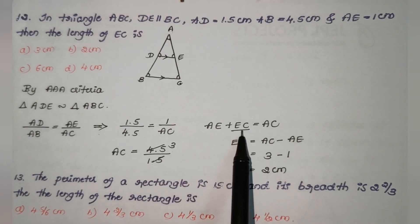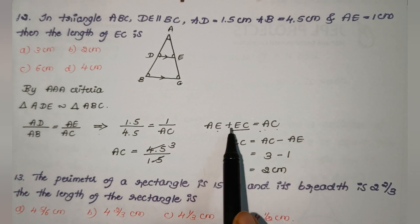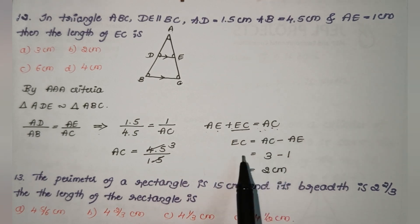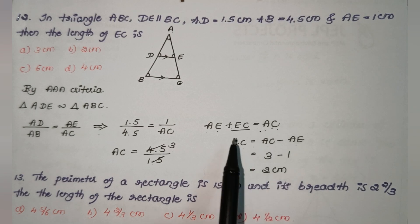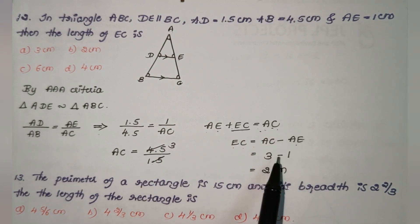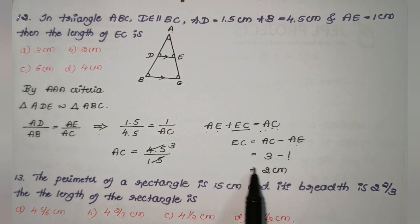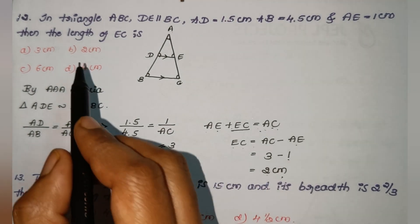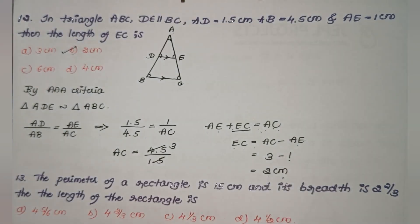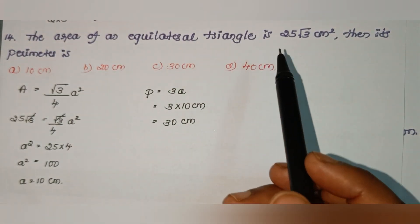Since AE + EC = AC, we get EC = AC − AE = 3 − 1 = 2 cm. So the answer is Option B.